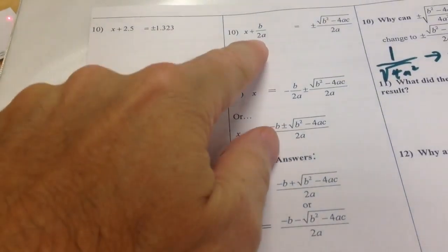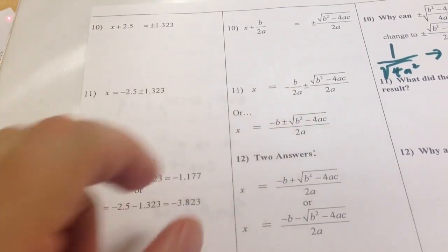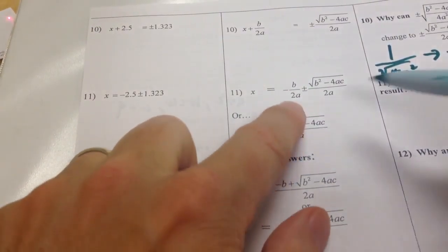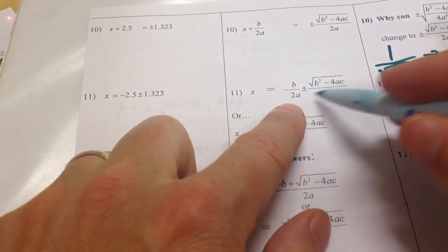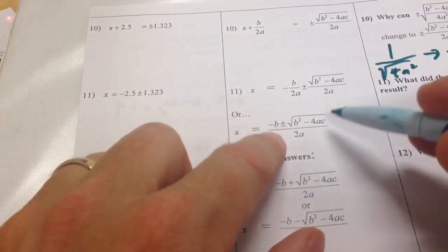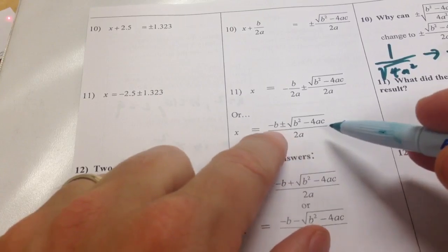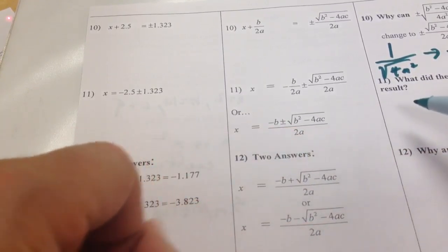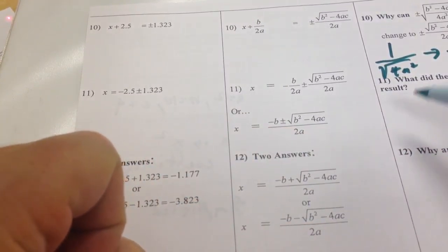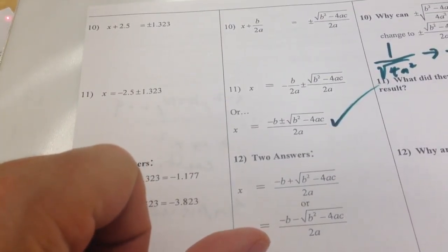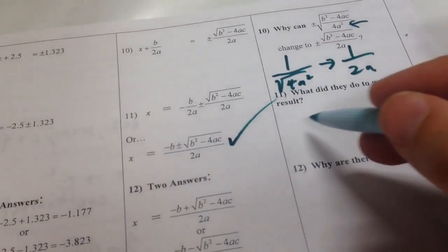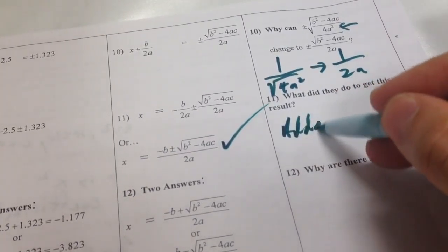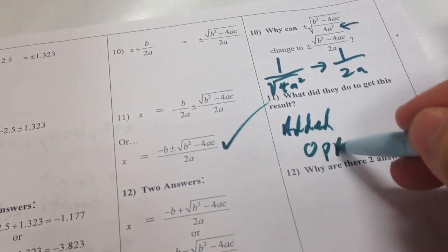Then what did Molly do? Molly subtracted the 2.5 from both sides to get essentially our final answer. And so Kyle and Harper did the same thing. They took the b/2a, minused it from both sides. They get this. And then they're going to say, oh, I got everything over 2a now. How nice. I've got a common denominator. So I'm just going to put everything over 2a. Negative b plus or minus square root of b² - 4ac. And that is the quadratic formula.